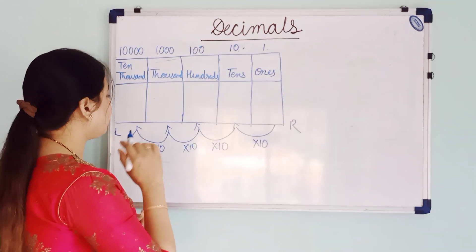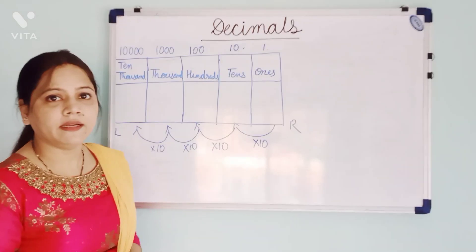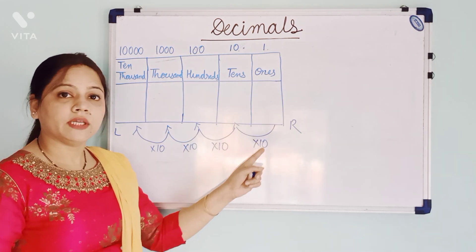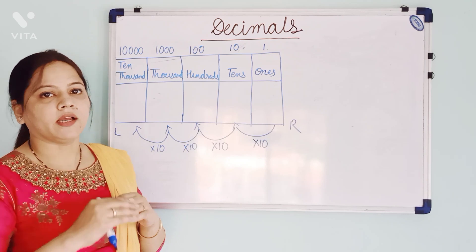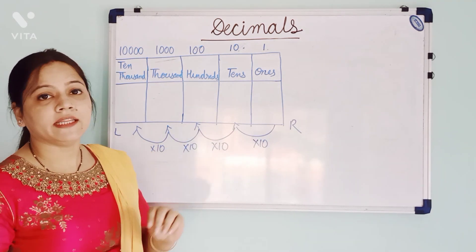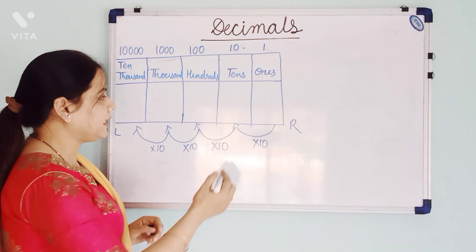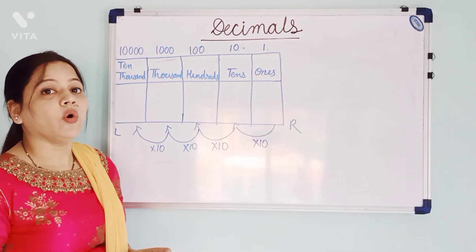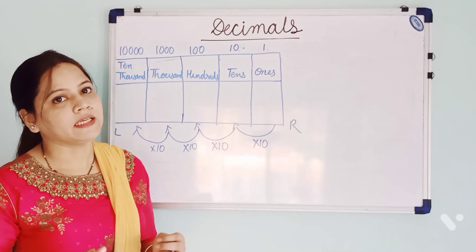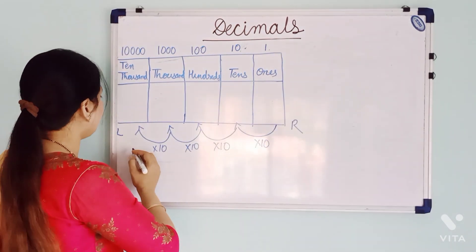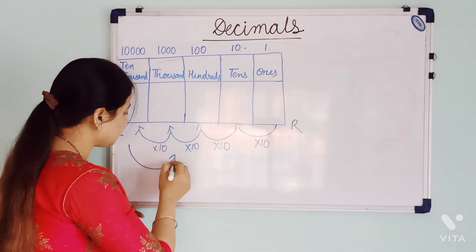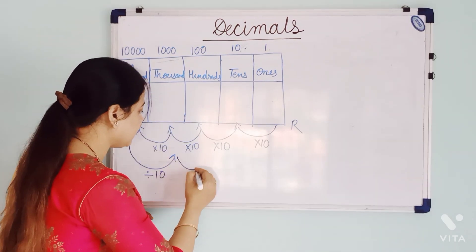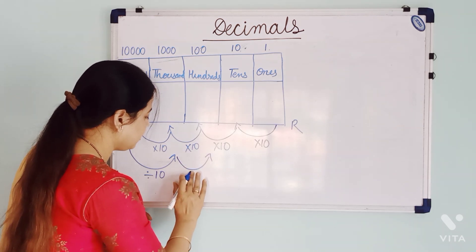Now, what we have to do if we want to move from left side to right side? If we move from left to right, we have to change the operation. Here we are going from right to left, now we are changing direction — left to right. So, what is the opposite of multiplication? It is division. So, if we want to move from left to right, we have to divide each place value by 10, and then we will reach the next right place value position.